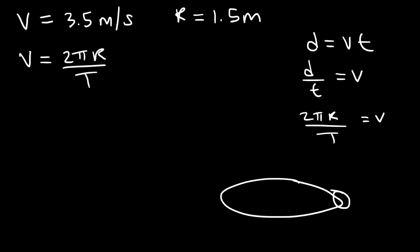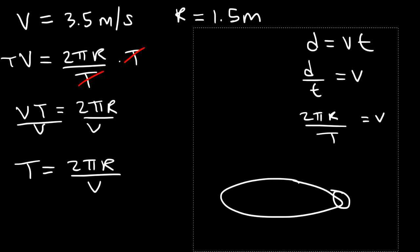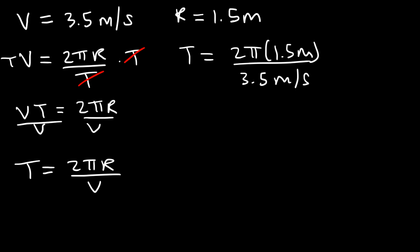To calculate the period T, multiply both sides by T to get vT equals 2πr, then divide both sides by v. So the period equals the circumference 2πr divided by the speed. That's 2π times 1.5 meters divided by 3.5 meters per second. So the period is about 2.69 seconds.